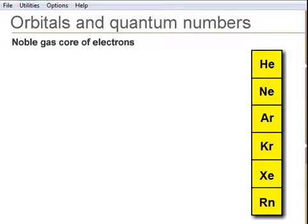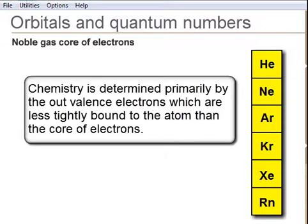Chemistry is usually determined by the outer, loosely bound valence electrons. The core is a set of tightly bound electrons which are equal to the number of that noble gas.